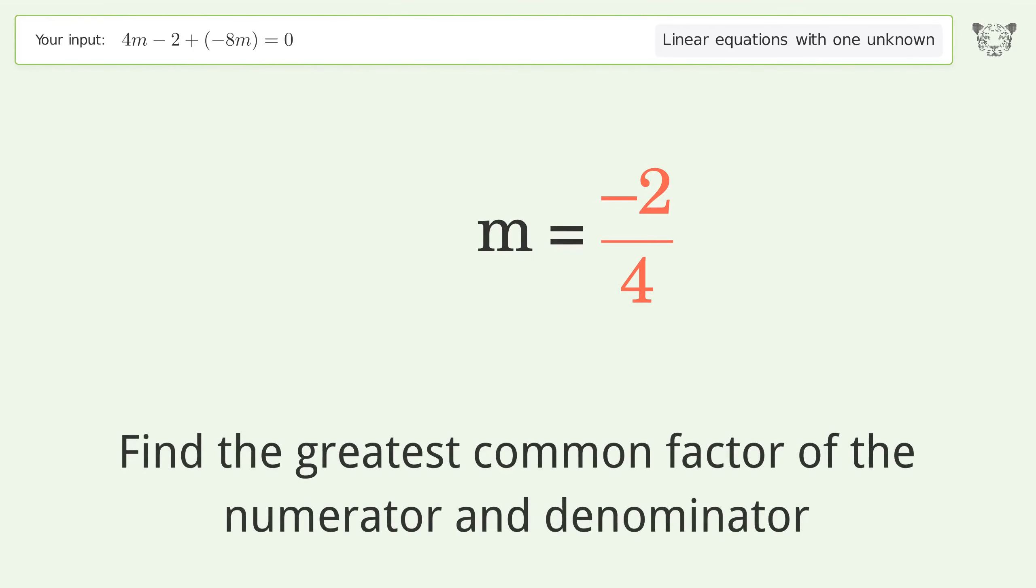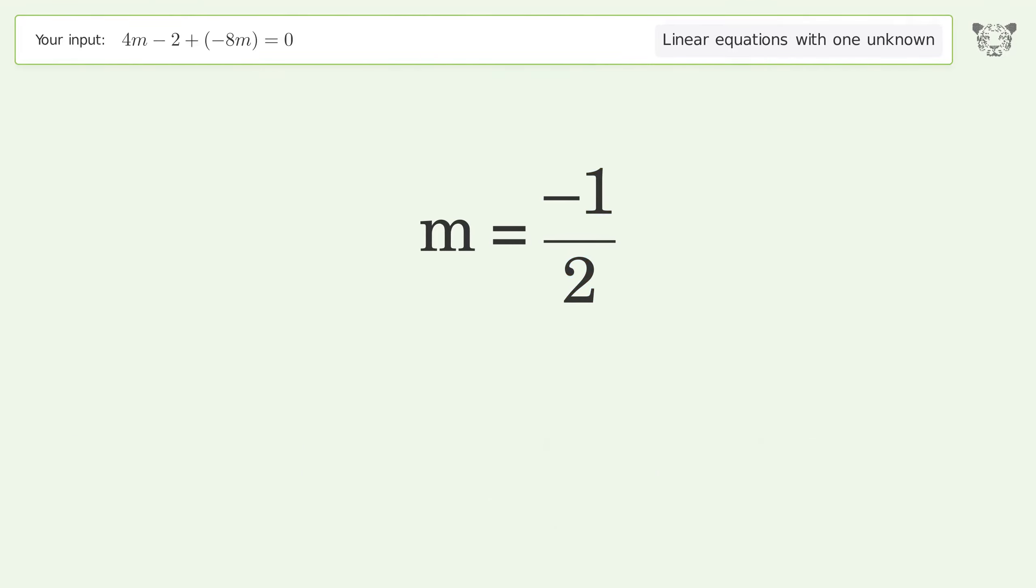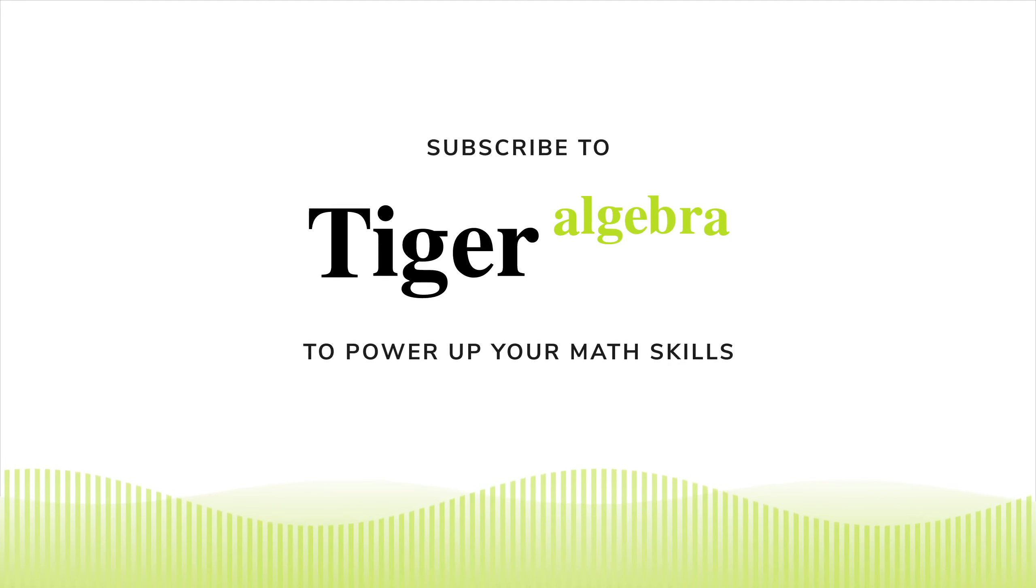Find the greatest common factor of the numerator and denominator. Factor out and cancel the greatest common factor. And so the final result is m equals negative 1 over 2. Thank you.